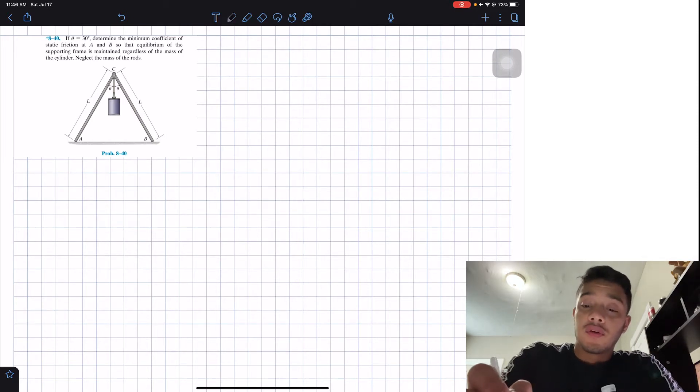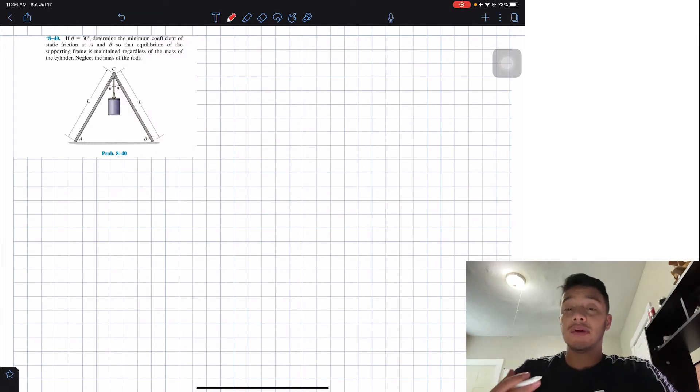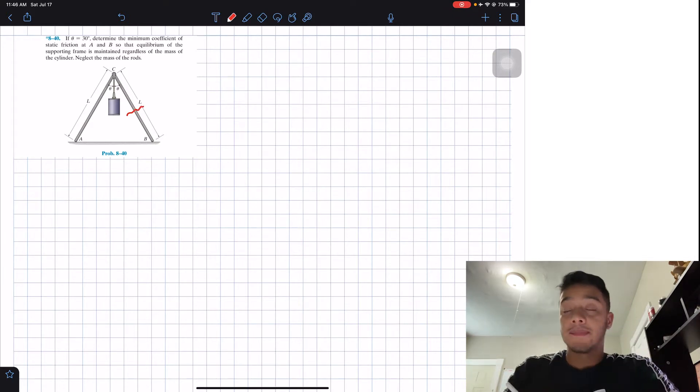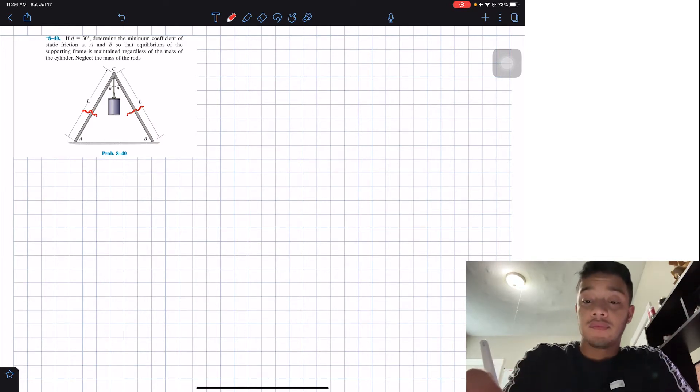Now, we learned multiple methods on statics, so what we're going to do is that we're going to apply the method of sections in this problem. And we're going to have a section at here in B, or we can have a section here at A, it doesn't matter, since we have symmetry. So due to that, it will be the same thing.